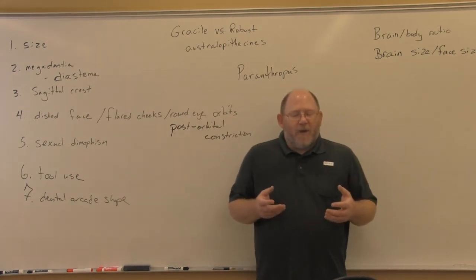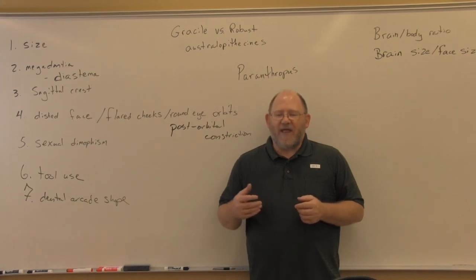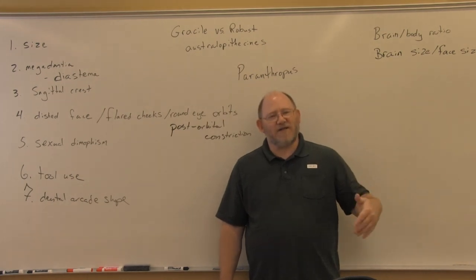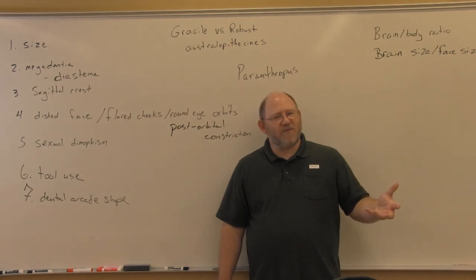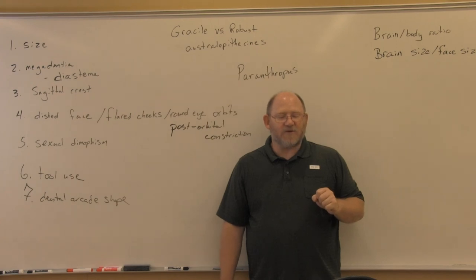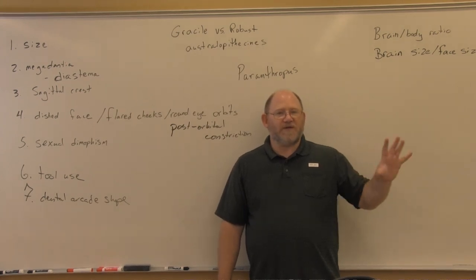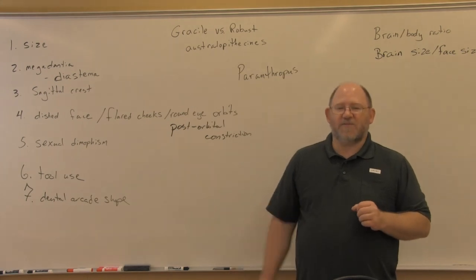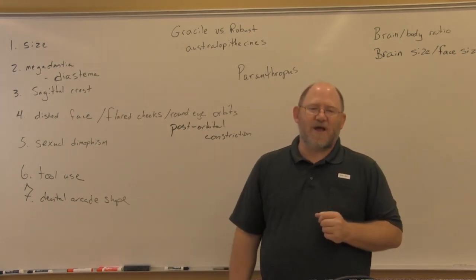There are several species of gracile australopithecines listed in your books and three species of robust australopithecines found throughout Africa. Some species of gracile australopithecines evolved into robust australopithecines, and different species of gracile australopithecines evolved into the first member of the genus Homo. So some form of gracile australopithecines evolved into Homo habilis, and also different species evolved into Paranthropus, or Australopithecus aethiopicus.